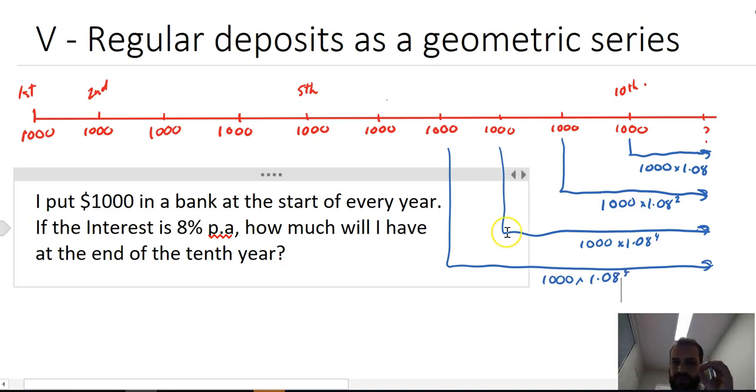If you look at what we've got, what we've actually got is a geometric sequence. We're going to take $1,000 times 1.08, and then $1,000 times 1.08 squared, and $1,000 times 1.08 to the four, and that should be three.